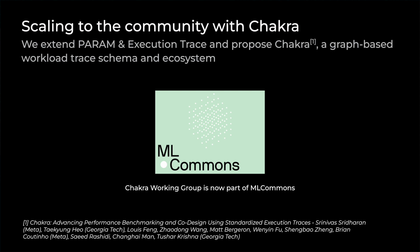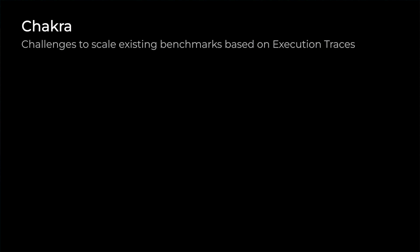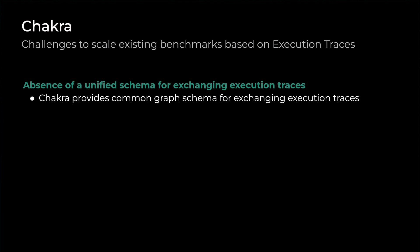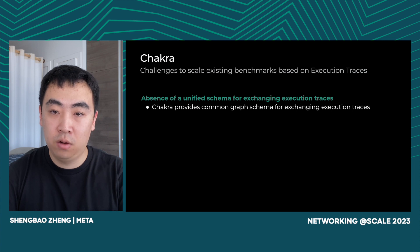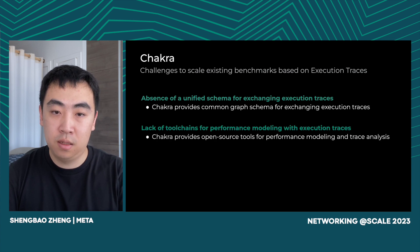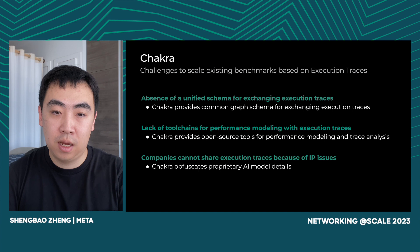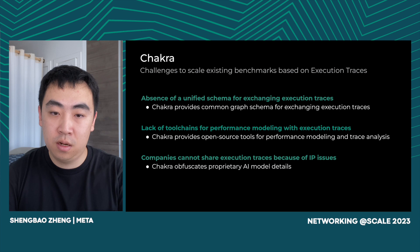For this purpose, we extended PARAM and Execution Trace and proposed Chakra, a graph-based workload trace schema and its ecosystem. Chakra Working Group is now part of ML Commons. We identified three main challenges to scale existing benchmarks: first, a unified schema for machine learning model execution trace is missing — Chakra addresses this by providing an open graph schema; second, the lack of tool chains for performance modeling — Chakra provides several tools for identifying bottlenecks and debugging issues; and last, current methodologies lack the ability to synthesize traces, which is critical to allow companies to exchange execution traces without revealing intellectual properties. Chakra obfuscates proprietary AI model details by synthesizing execution traces.